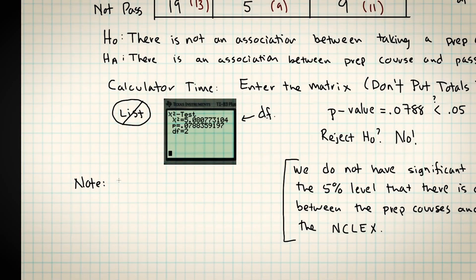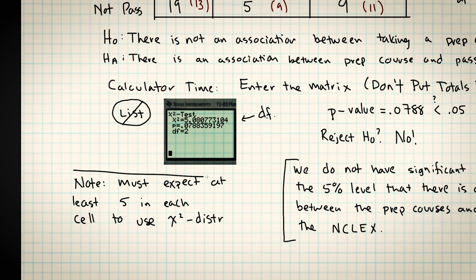There's a qualification that has to be met. You can't just use the chi-square distribution whenever you want. Remember when we were doing hypothesis testing for proportions, we had to expect 10 successes and 10 failures, at least 10 successes and 10 failures. When we were using the t distribution, we had to have a sample size of at least 25. So there's always some catch. In order to use the chi-square distribution, you have to expect that there is at least five in each cell.